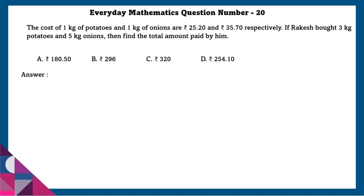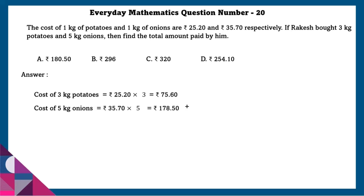Question 20: The cost of 1 kg potato and 1 kg onion are 25 rupees 35 paise and 35 rupees 70 paise respectively. If Rakesh bought 3 kg potatoes and 5 kg onions, find the total amount paid by him. Cost of 3 kg potatoes is 75.60 rupees. Cost of 5 kg onions is 178.50 rupees. Total amount paid is 75.60 + 178.50 = 254.10 rupees.